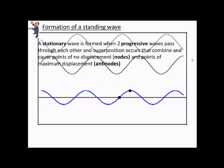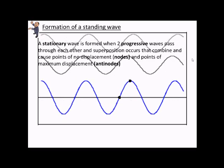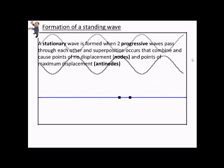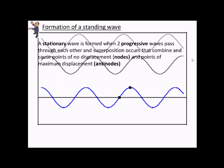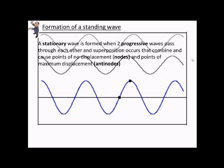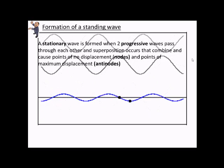Now, formation of a stationary wave or a standing wave. A standing wave is made when two progressive waves pass through each other and superposition occurs. The points add together, and we get positions of no displacement, i.e. nodes, and points of maximum displacement, i.e. anti-nodes.